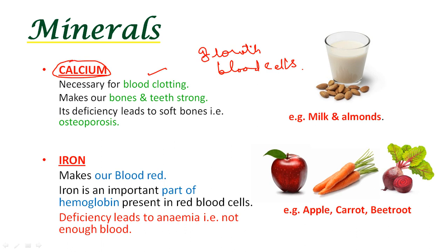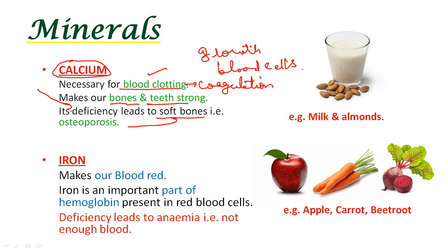The first mineral is calcium. Calcium is necessary for blood clotting, also known as blood coagulation. Calcium is also important for making bones and teeth strong. Deficiency of calcium leads to soft bones and the disease called osteoporosis.